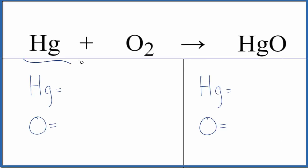Let's balance the equation Hg plus O2. This is mercury metal and oxygen gas. We'll also look at the type of reaction and write the states.